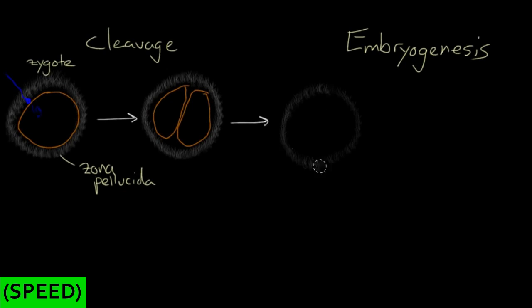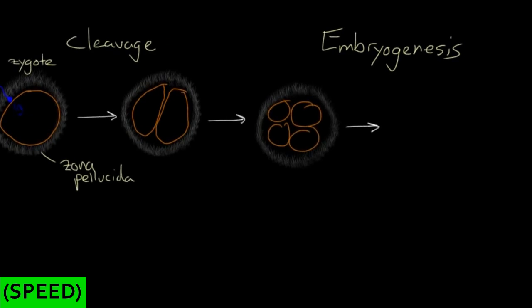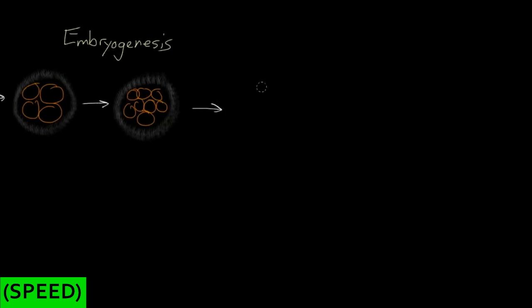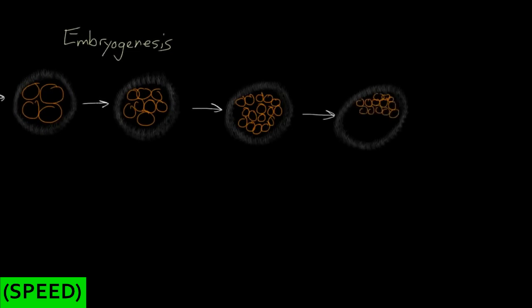And you do this a number of times, dividing from two cells to four, from four cells to eight, all the while staying within the zona pellucida. So you've gone from 16 cells to 32 cells. At this point, you look different enough that somebody decides to give you a new name. So instead of being called a zygote, you're called a morula.